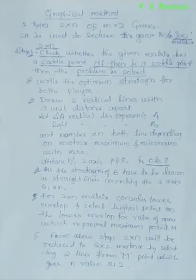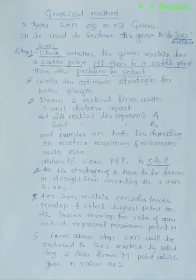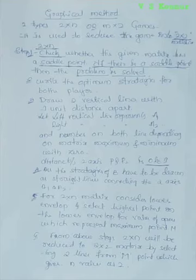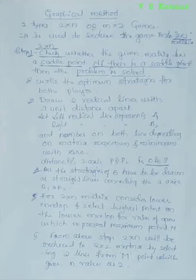The next method is the graphical method. There are two types in the graphical method in game theory. The first one is 2×N, where player A is fixed to two and player B is N. The second one is M×2, where player B is fixed to two and player A has M strategies.